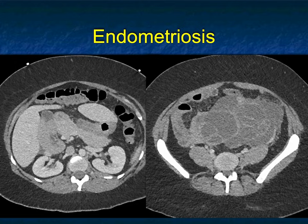Endometriosis is a benign disease, but it causes all sorts of symptoms — from pain to bowel obstruction to implants in the abdominal wall. It's an aggressive benign process.